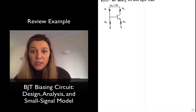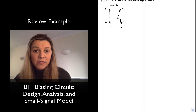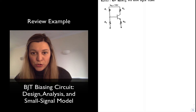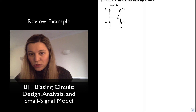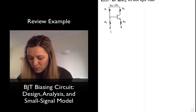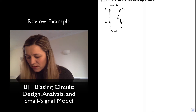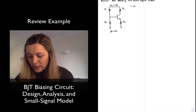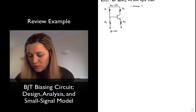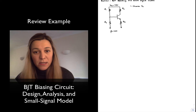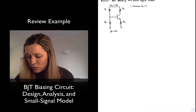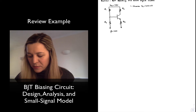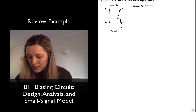Designing the biasing network means selecting the values for those resistors. I'm going to make an assumption of a nominal beta of 100 for my transistor. Step number one is to select a value for my collector current IC, which I'm going to set to 2.5 milliamps.